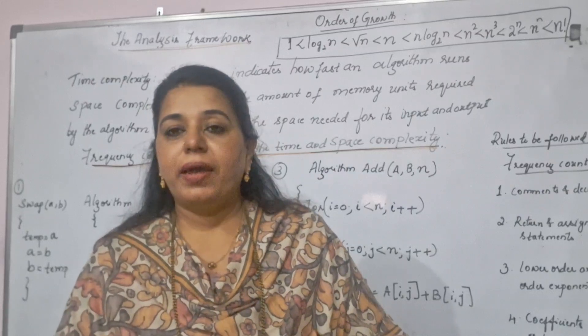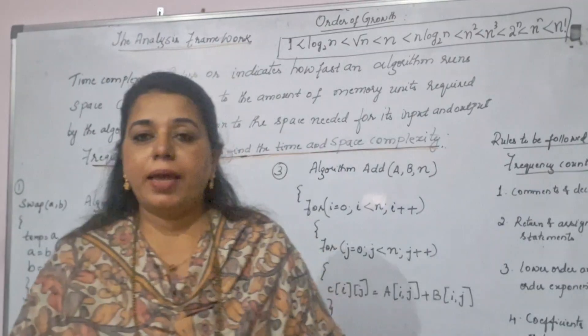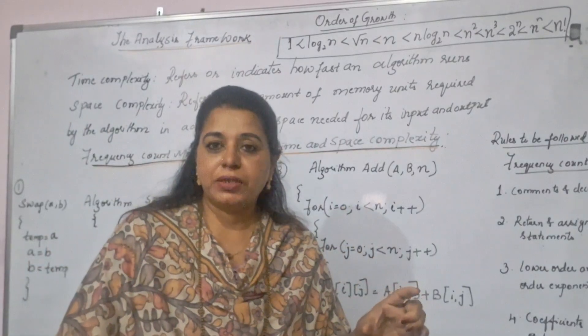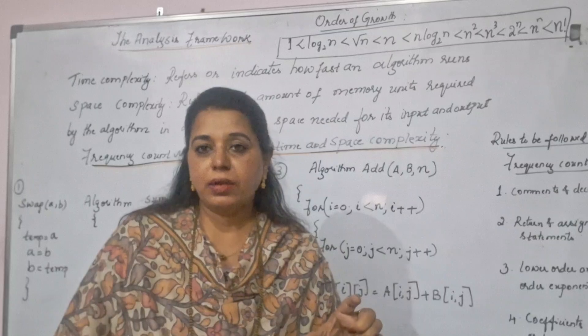It can be n, n square, it can be log n, it can be root n, it can be n square, n cube. So, that is called as the different functions. That is the running time which you get for various algorithms.